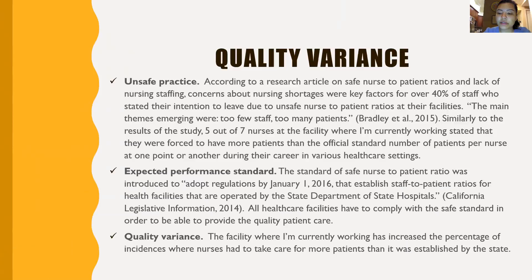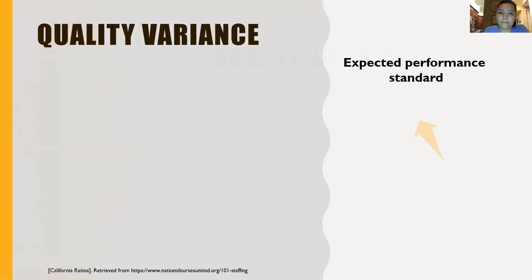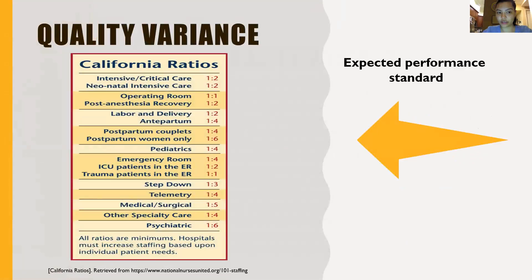The expected performance standard covers nurse-to-patient ratios for health facilities operated by the State Department of State Hospitals. All health care facilities must comply with the safe standard in order to provide quality patient care. The facility where I'm currently working has increased the percentage of incidences where nurses had to care for more patients than established by the state. Here are the expected performance standards according to California ratios — you can see different types of units and how many patients per nurse are required as safe practice.